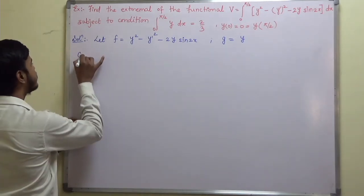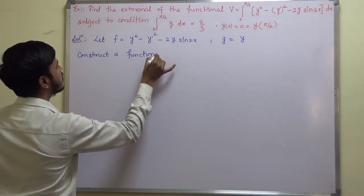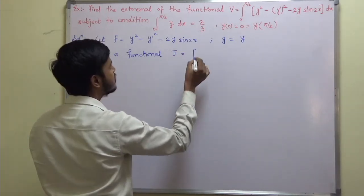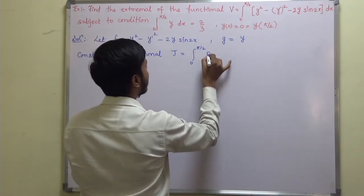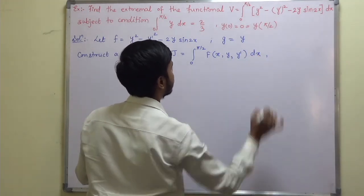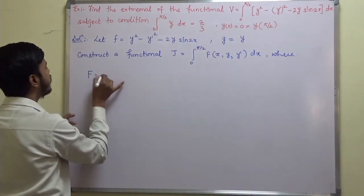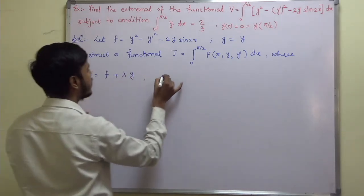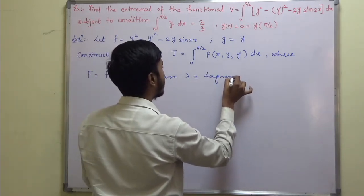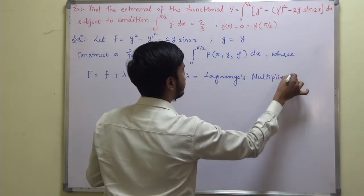Construct a functional J equal to the integration from 0 to π/2 of F(x, y, y-dash) dx, where F is equal to f plus λg. Here, λ is the Lagrange multiplier.